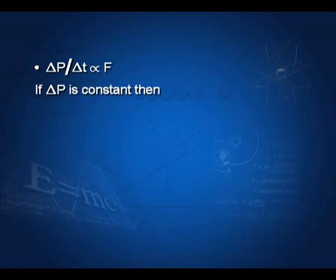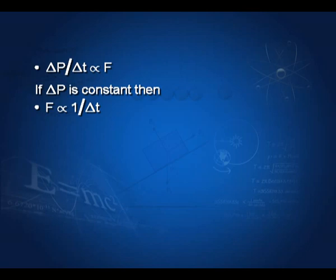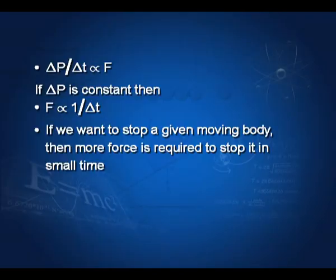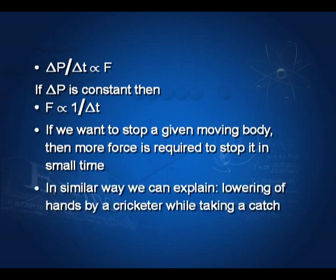Since ΔP/Δt is directly proportional to f, if ΔP is constant — meaning the mass and change in velocity are both constant — then force is inversely proportional to time. This means if you want to stop a body moving with a given velocity within a shorter time interval, you have to apply more force. Similarly, the lowering of hands by a cricketer while taking a catch can be explained by this: by lowering the hands, the cricketer increases the time period, and since force is inversely proportional to time, he has to apply lesser force.